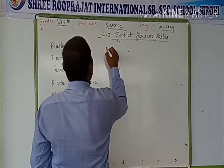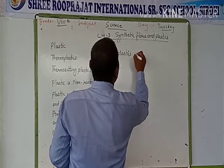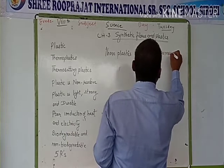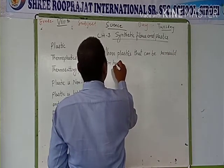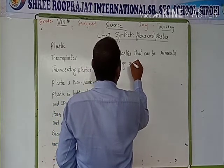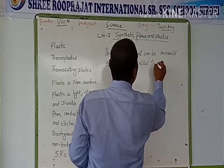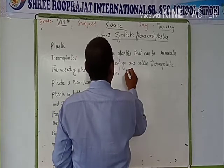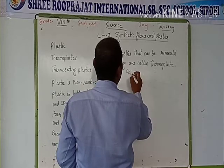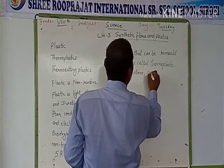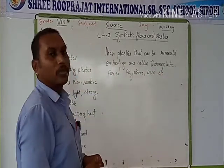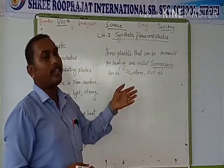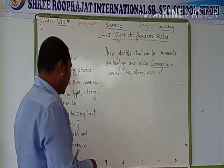So, those plastics that can be remolded on heating are called thermoplastic. For example, polythene, PVC, etc. The definition of thermoplastic: plastics that can be remolded on heating are called thermoplastic.